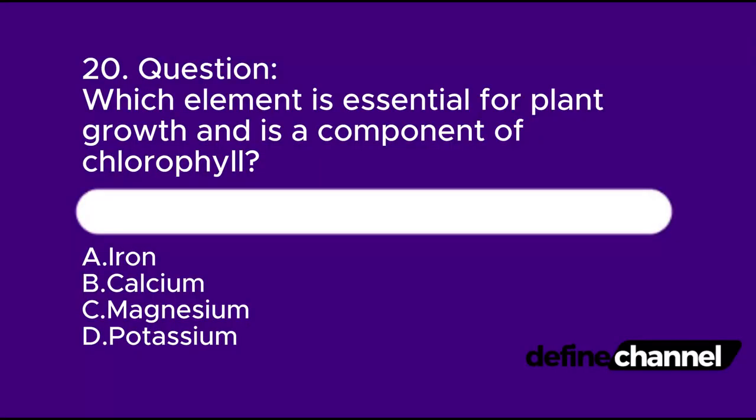Question 20. Which element is essential for plant growth and is a component of chlorophyll? A. Iron. B. Calcium. C. Magnesium. D. Potassium. Which is the correct answer?